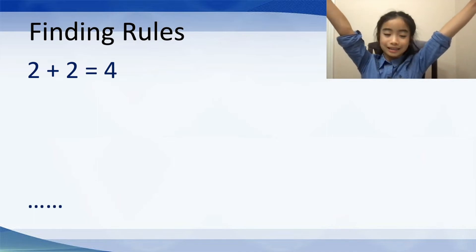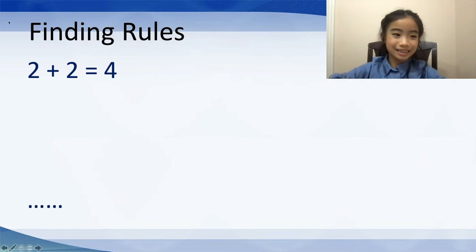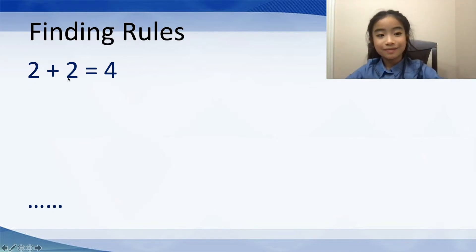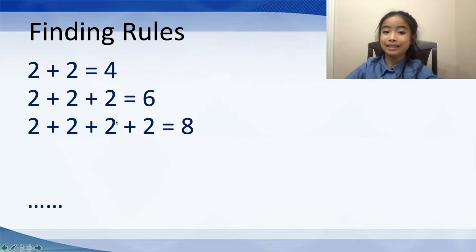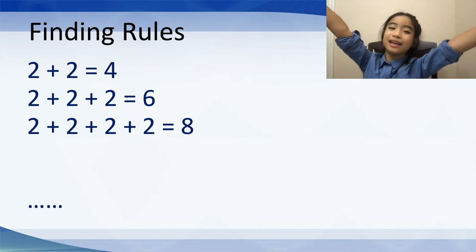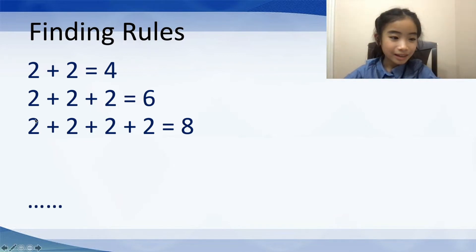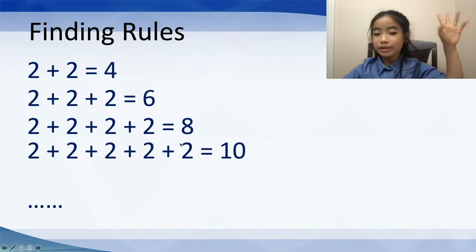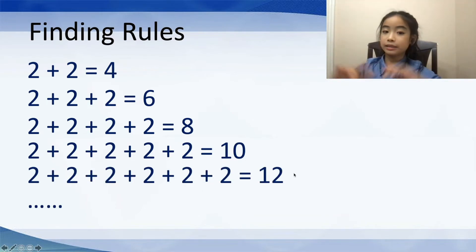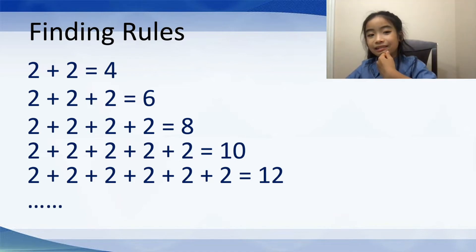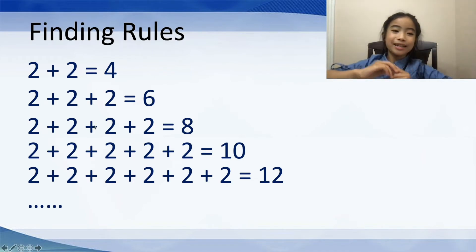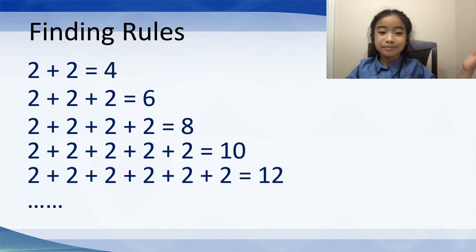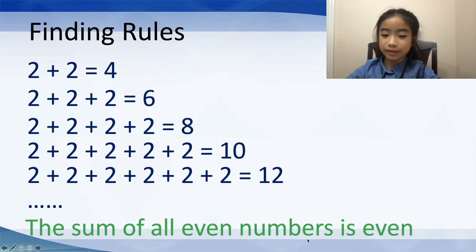Next, let's find a pattern. I'm sure you all know what 2 plus 2 is — it's 4. What about 3 twos? It's 6. 4 twos is 8. I have a multiplication song on my channel and you can watch it. 5 twos is 10, 6 twos is 12, and so on. Did you find a pattern? No matter how many twos you add, you're going to have an even number. So the sum of all even numbers is even.